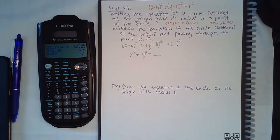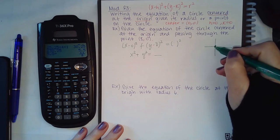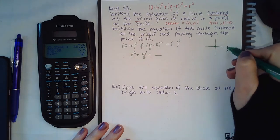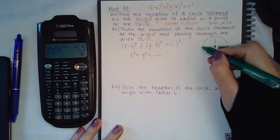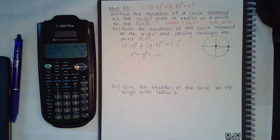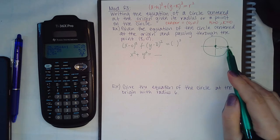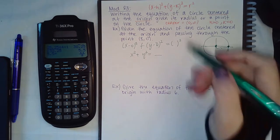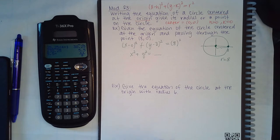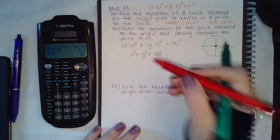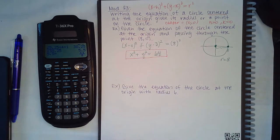Since they gave me another point, it helps to graph it. Here's the center at the origin, and at (8, 0) is another point on the circle. The radius is the distance from 0 to 8, which is 8. So the radius equals 8, and r² = 64. The entire equation is x² + y² = 64.